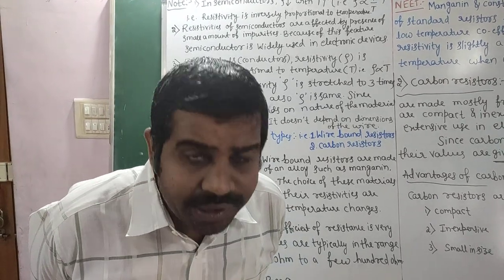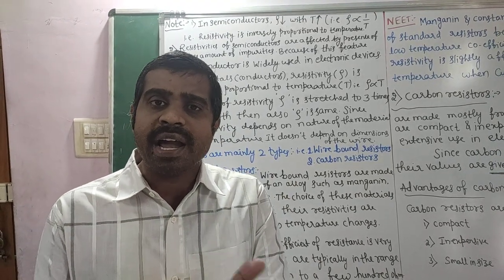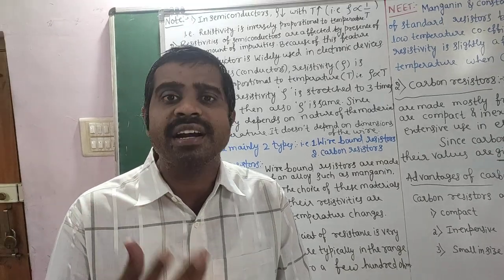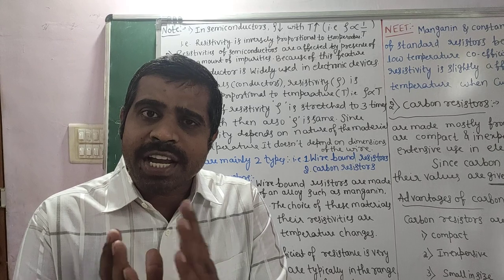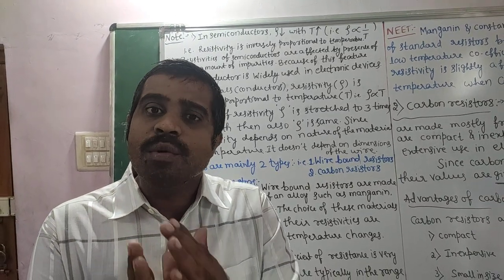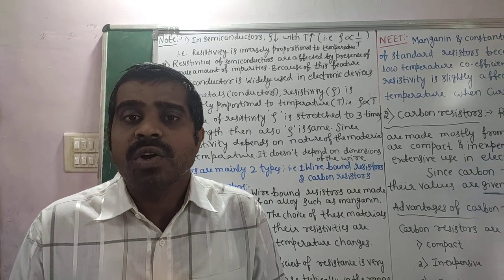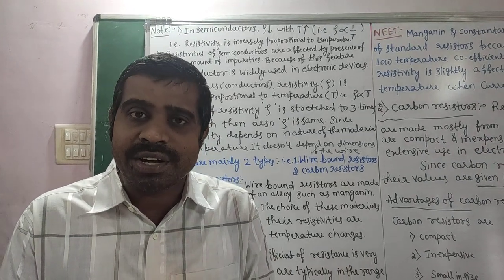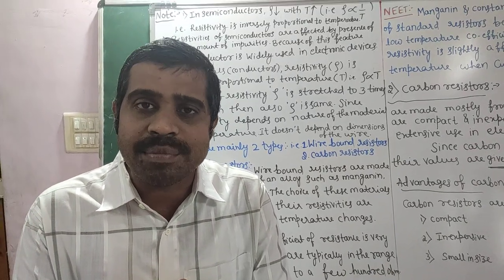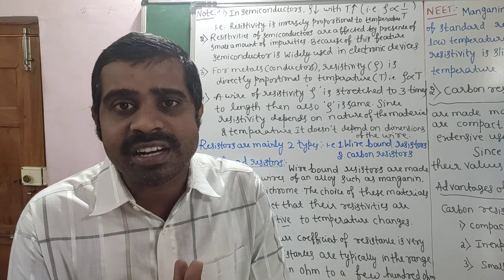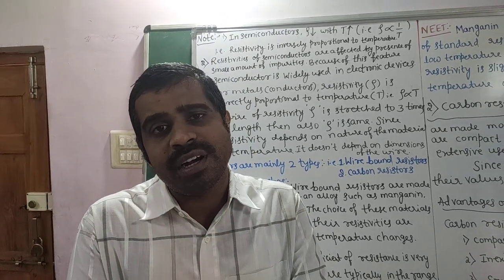In your 10th class you studied semiconductors — N-type and P-type semiconductor. By adding some impurities we can increase their conductivity. A pure semiconductor's conductivity lies between insulators and conductors. There are two types of semiconductors: extrinsic (impure) semiconductor and intrinsic (pure) semiconductor.